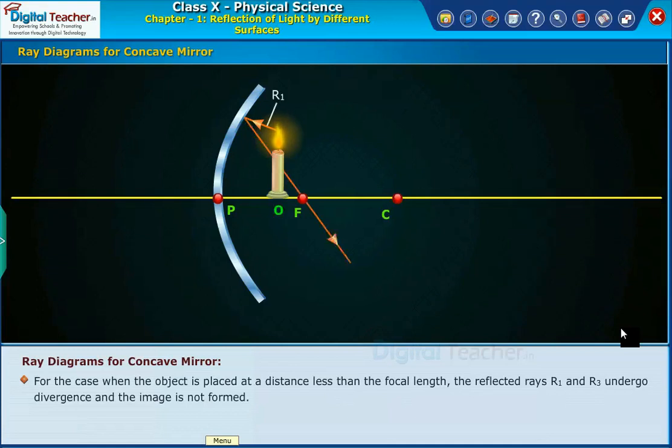For the case when the object is placed at a distance less than the focal length, the reflected rays R1 and R3 undergo divergence and the image is not formed.